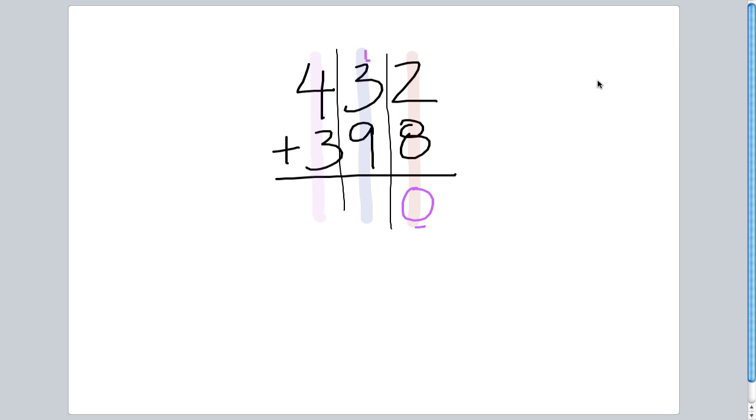Now I'll add the tens column. 9 plus 3 is 12 plus the 10 that I carried gives me 13. I'll put the 3 down and carry that 1 or the 100 into the hundreds column. 4 plus 1 is 5 plus 3 gives me 8. 432 plus 398 gives me 830.